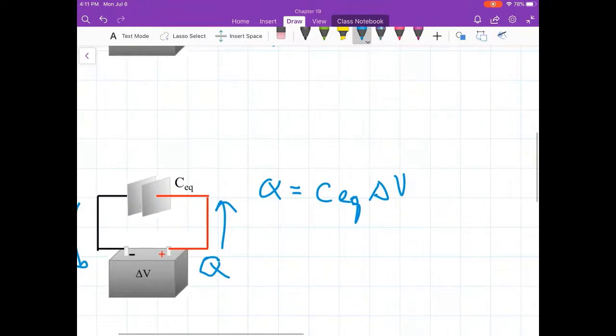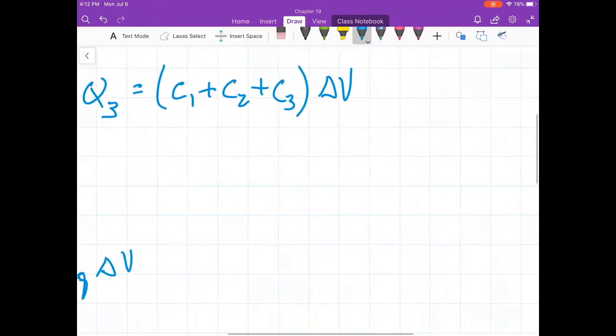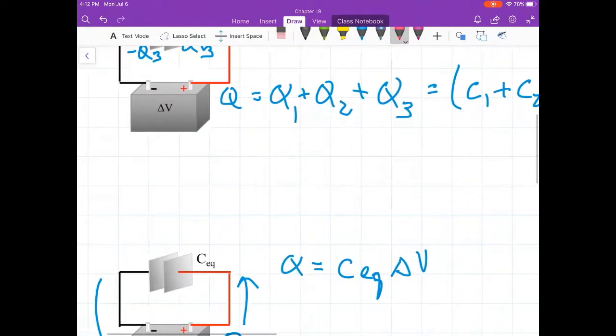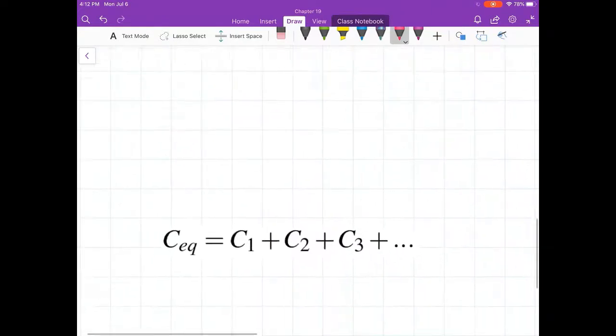Now since these are equivalent, this Q for the single capacitor is the same as the Q for the three parallel. I can equate these two equations. This is equal to C EQ delta V. Now, since it's the same delta V, I can cancel that one out, cancel that one out. I'm left with C1 plus C2 plus C3 equals C EQ. So what I find is this relationship right here.